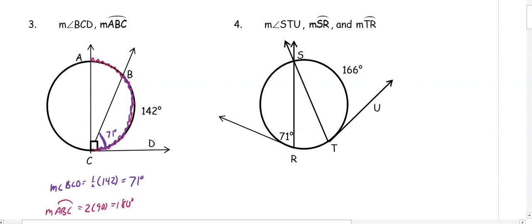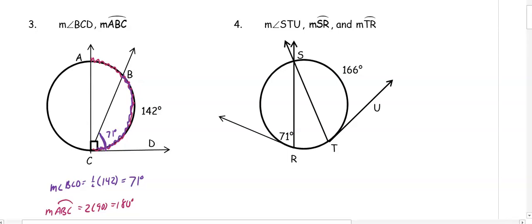In number four, we need to find the measure of angle STU, the measure of arc SR, and the measure of arc TR. To find angle STU, it is half of the intercepted arc. If the arc is 166 degrees, half of 166 is 83 degrees, so the angle is 83 degrees.